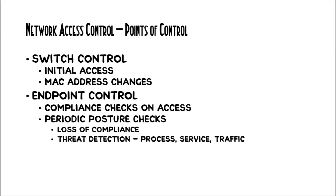NAC is going to deal with control on two different levels. On the switch, it's going to look for what is connecting, should it be connecting to this network, and then if something disconnects and another thing connects in its place, looking at that MAC address change and being able to reevaluate what is connected. For endpoint control, NAC will have to ask: is this particular device connecting compliant with what I need for my network, and then making periodic checks to make sure that what is connected remains compliant.